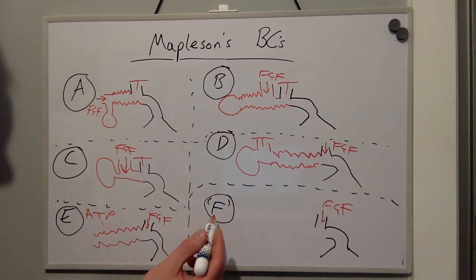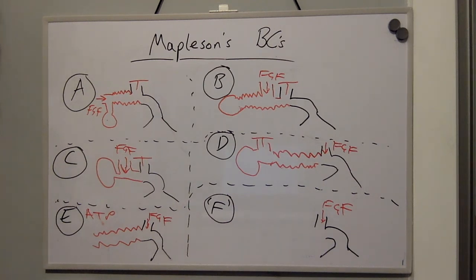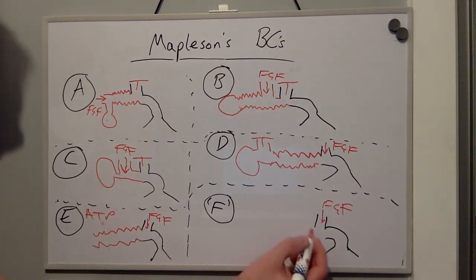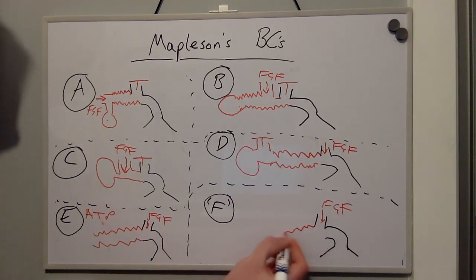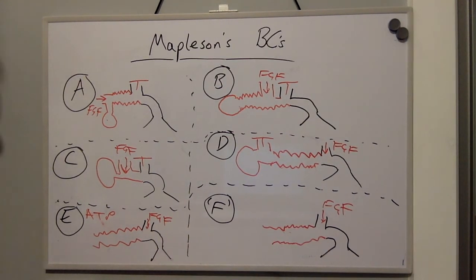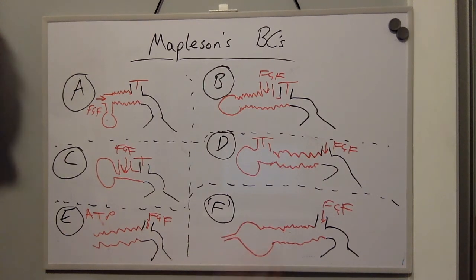And then F is Jackson-Reese modification of Ayers T piece and it's very similar to Mapleson E but has the addition of an open ended bag on the end of the circuit.